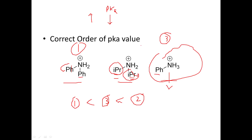To summarize: the better the ability of the compound to donate the proton, the lower the pKa. Just ingrain this in your mind — the easier a compound can lose a proton, the lower will be the pKa. Acidity and pKa have an inverse relation. If a compound can easily donate a proton, it will have a lower pKa.